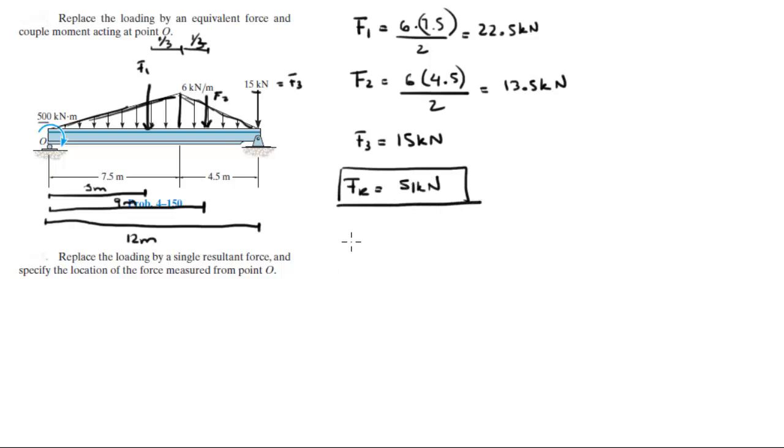Let's find the moment. Let's assume clockwise is positive. The moment at O is equal to the 500 kN·m, which is given at the beginning, plus the moment being created by F1, which is positive because it's making a clockwise moment.